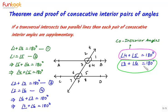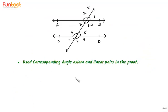So now we have proved that angle 3 plus angle 6 equals 180 degrees, and these angles are also called co-interior angles. So angle 4 and 5, and angle 3 and 6, are referred to as co-interior angles. We have now proved that each pair of consecutive interior angles are supplementary when a transversal intersects a pair of parallel lines. To summarize, for this proof we used the corresponding angle axiom and the properties of linear pairs.